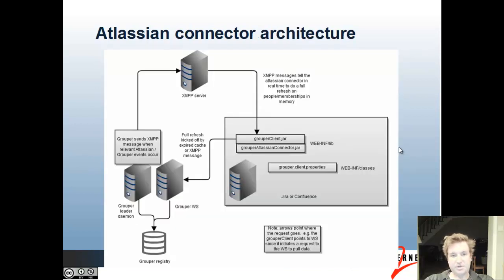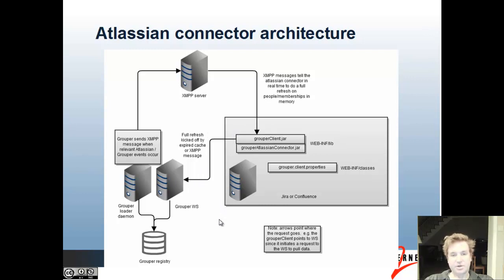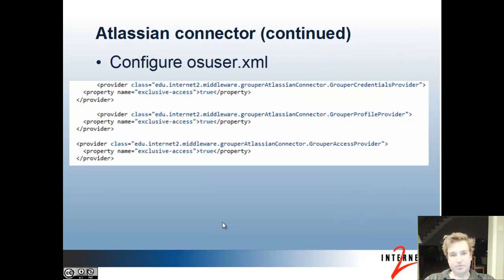The architecture for the Atlassian connector includes the grouper Atlassian connector jar, the grouper client, and the grouper client.properties. Full refreshes are kicked off either when the cache is cleared or when an XMPP message comes in saying that something changed in that group. To configure the Atlassian connector, you go to the osuser.xml, take out the defaults, and configure the grouper implementation of the interfaces.